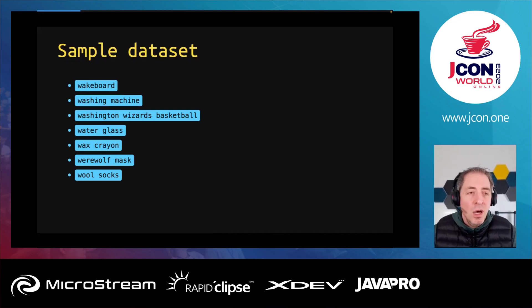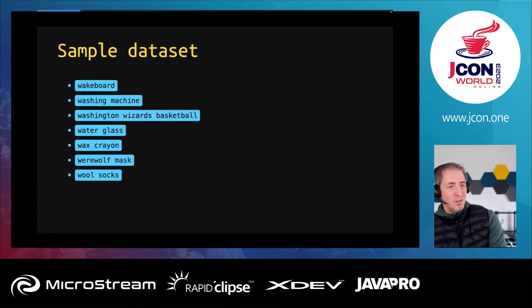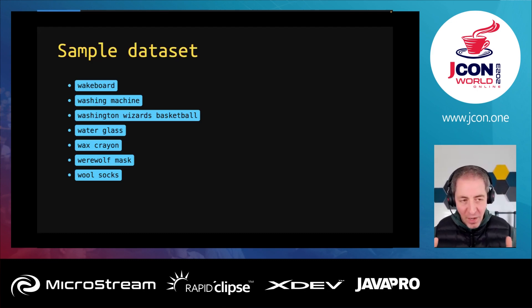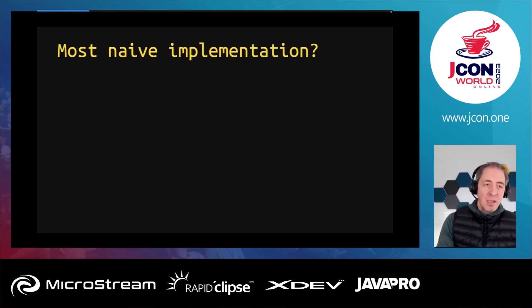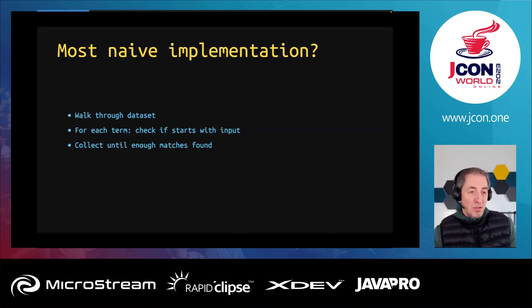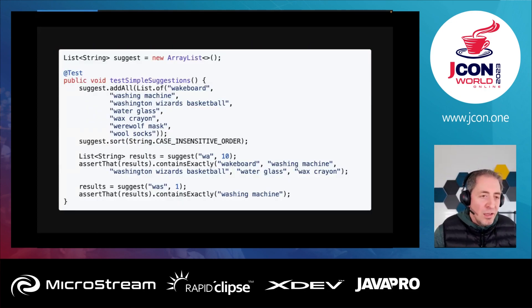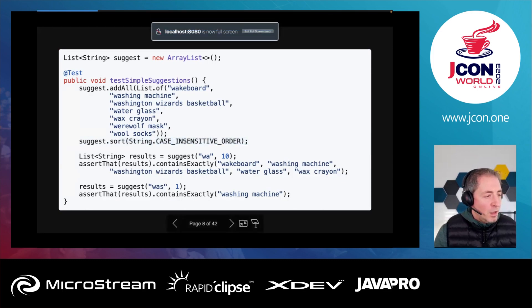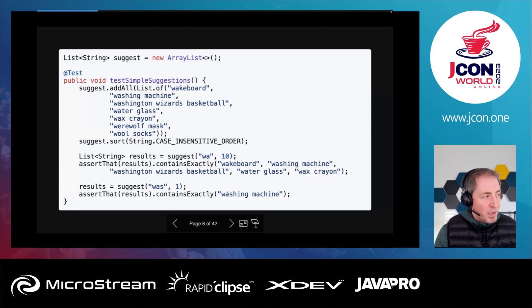To get a first feeling for how autosuggest works, here's my sample dataset — pretty much items any online shop would have, ranging from a wakeboard to a wax tray, all starting with 'w'. The most naive implementation: you have your dataset, walk through the terms, check if each starts with the input, and collect until you have enough matches — say a limit of 10. You sort the list, run a suggestion, get back results, run another for a different input.